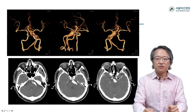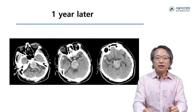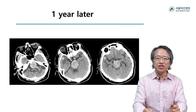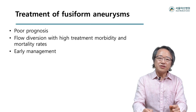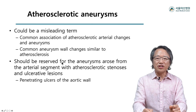We considered flow diversion, but the risk of further branch occlusion is known to be very high. The patient declined that option and unfortunately the lesion was markedly aggravated at one-year follow-up, leaving no further treatment option. Since management of these lesions is very challenging, observation only may be the best option as of now.